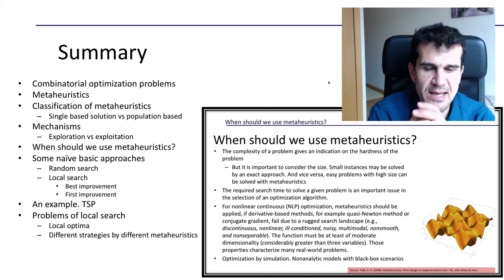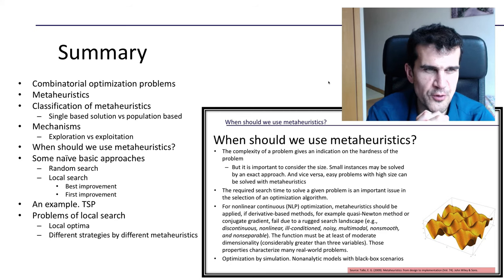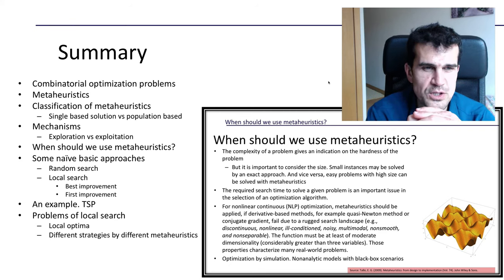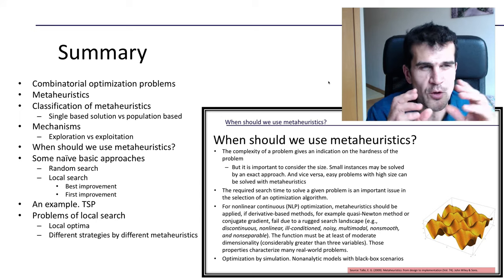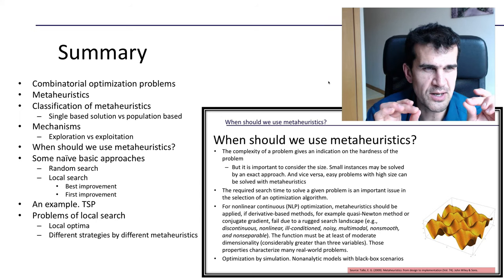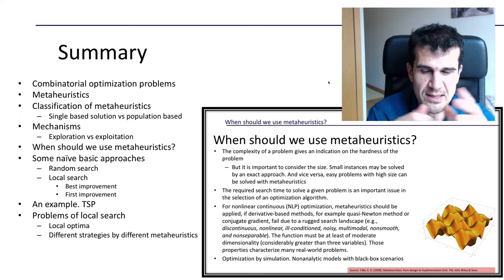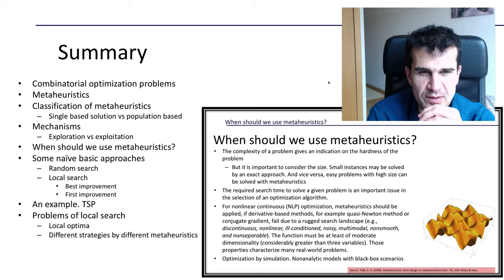Then we discussed different cases where we should probably consider using metaheuristics. The first one is the complexity of the problem — if the problem scales very badly, like the traveling salesman problem, we should consider metaheuristics. But also the specific size of the problem is relevant, because sometimes we have problems that scale pretty well but the size is so big that we cannot use any exact methods, and for those large problems we should also consider the use of metaheuristics.